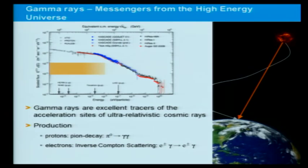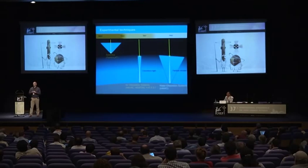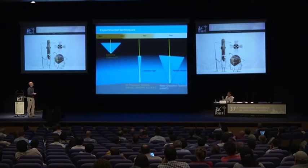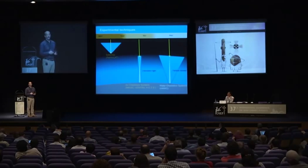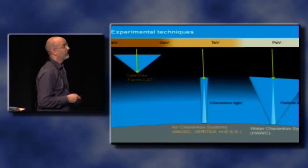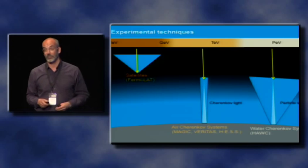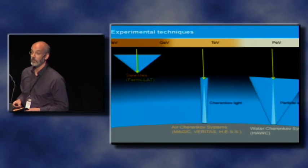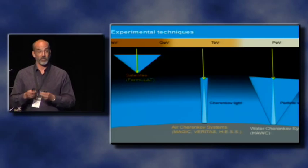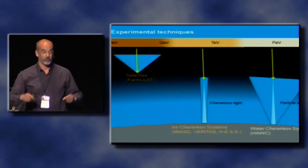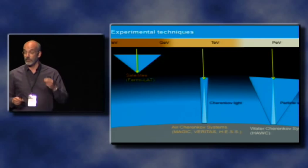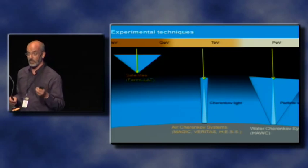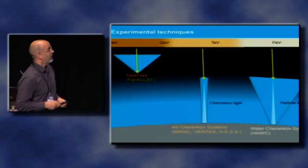We are now spanning an enormous energy band in gamma rays, starting at MeV and going up to — optimistically — the PeV energy scale. We cannot cover this with a single experimental technique. There is also the disadvantage that our atmosphere protects us from gamma rays, which from the experimental point of view is very bad, because if you want to directly detect photons, you have to do it in space.